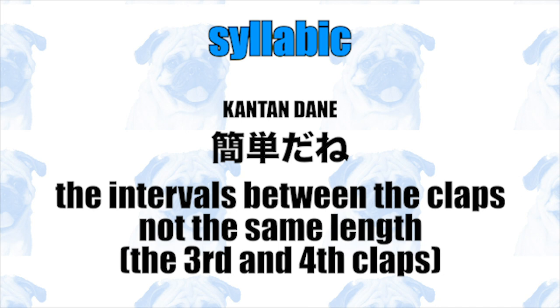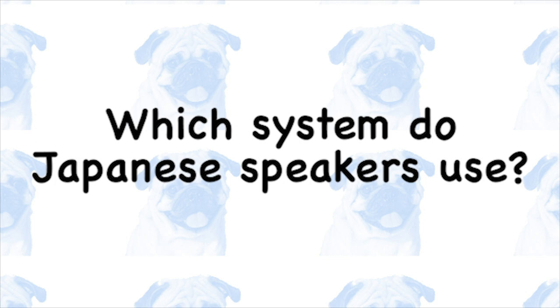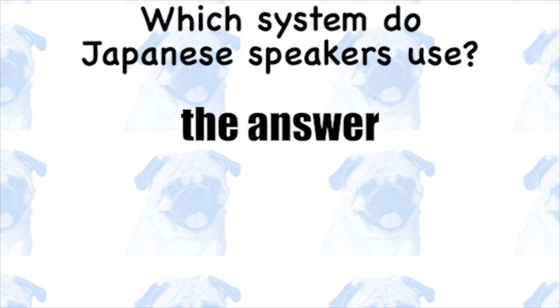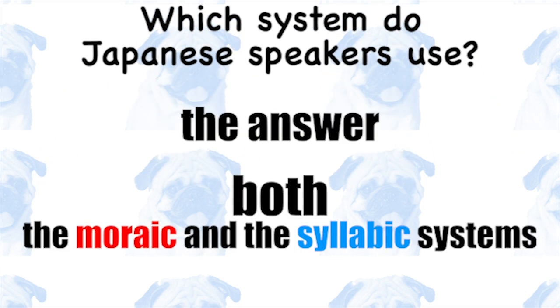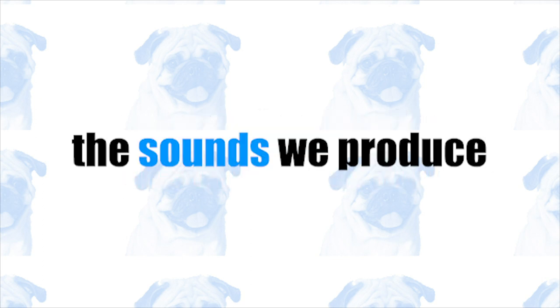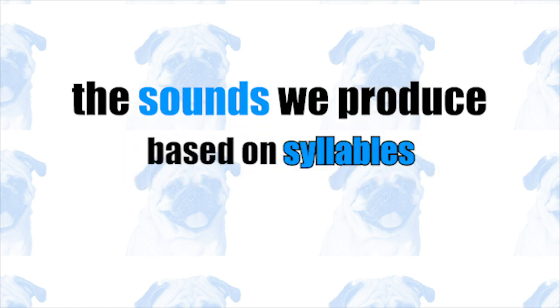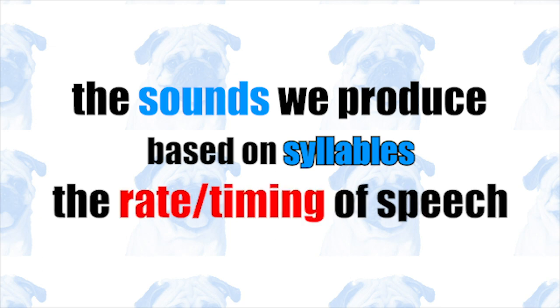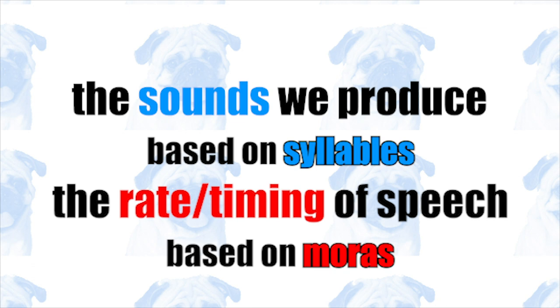So, which system do Japanese speakers use when they speak? Well, the answer is both. This is quite complicated and confusing, but Japanese speakers speak syllables to the rhythm of moras. To put it differently, the way we produce sounds is based on the syllabic system, so the sounds that come out of my mouth are syllables, whereas the rate at which these syllables are produced is based on the moraic system.